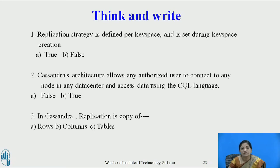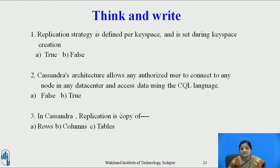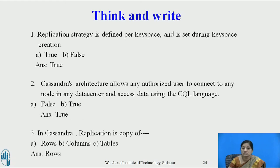Cassandra's architecture allows any authorized user to connect to a node in any data center and access data using Cassandra Query Language — yes, because Cassandra follows peer-to-peer architecture and every node can execute client requests, whether read or write. Every node has the same role. In Cassandra, replication is a copy of rows, because Cassandra uses horizontal fragmentation.